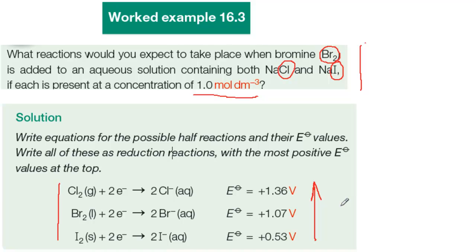Now, a half reaction will oxidize any other half reaction that has a less positive value of E standard, and that means a half reaction that is lower down the list. So let's look at the reactions in this worked example.